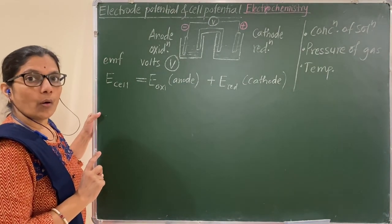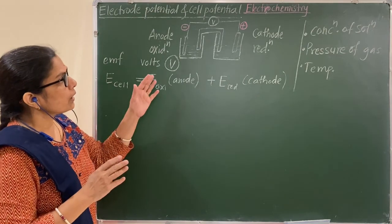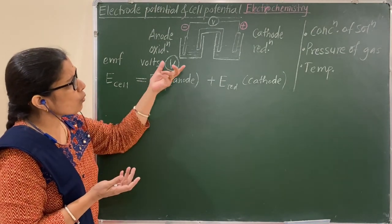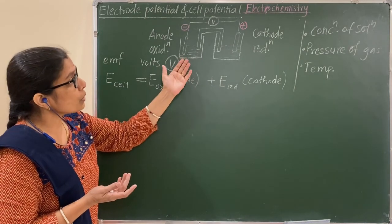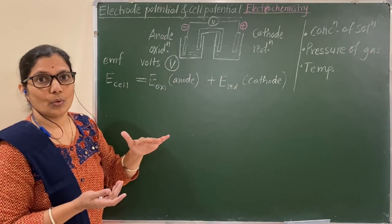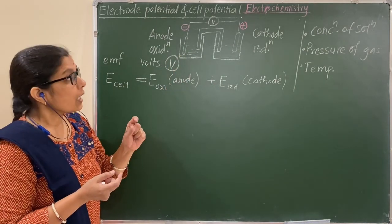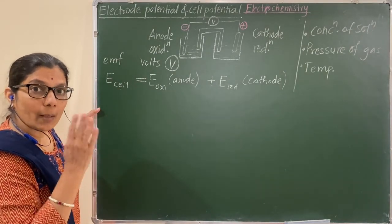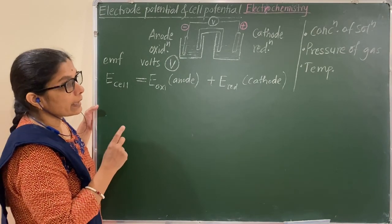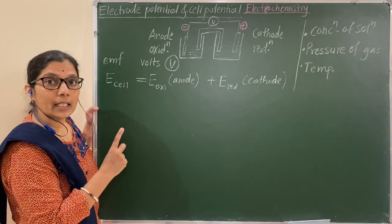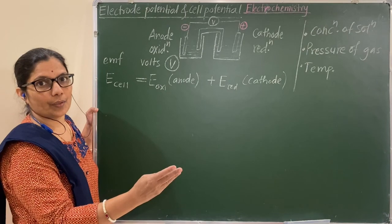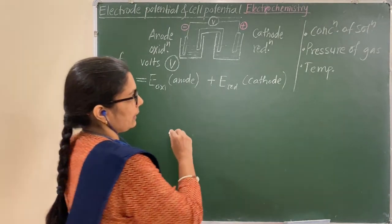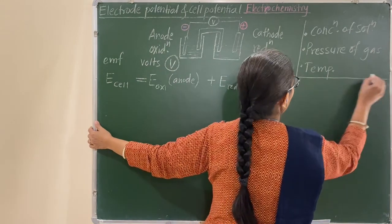You know that there are a number of galvanic cells. You can construct so many galvanic cells by using different electrodes, and thus many different cell potentials exist. For comparison, it is necessary to set some standard conditions. Let us see what those standard conditions are.